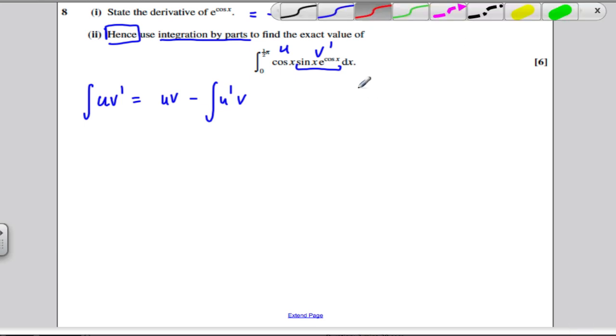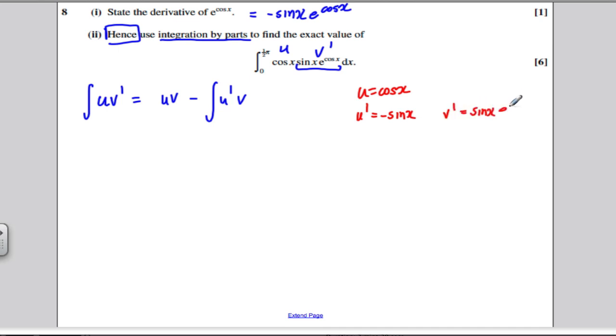Let's write that out. Our u is going to be cos x, therefore u dashed is going to be equal to minus sine x. And our v dashed we've defined to be sine x e to the cos x. So therefore our v integrating that using the part above must be minus e to the cos x.